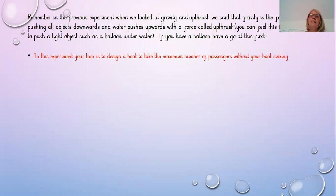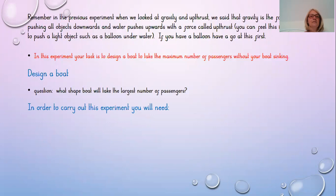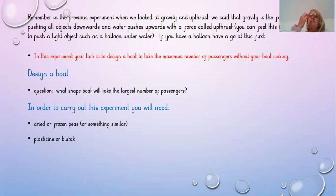In this experiment, your task is to design a boat to take the maximum number of passengers without your boat actually sinking. The question you need to be asking is: what shape boat will take the largest number of passengers? To carry out this experiment you're going to need dried or frozen peas, or something similar. If you don't have those, you could use cubes or Lego bricks, but they all need to be the same size. You'll also need some plasticine or blue tack, and possibly some foil.